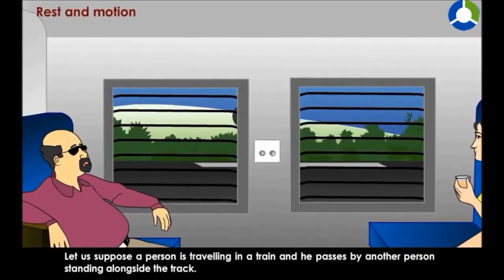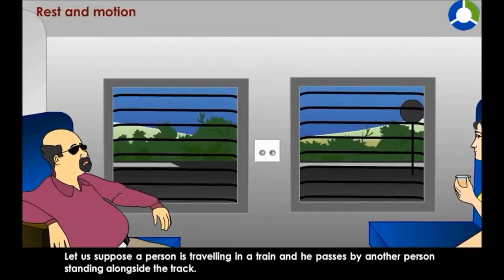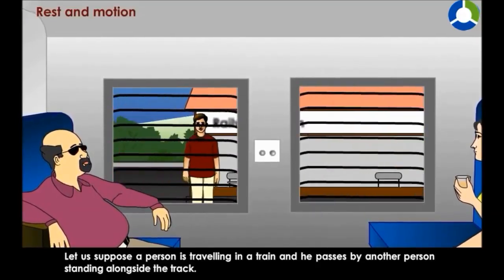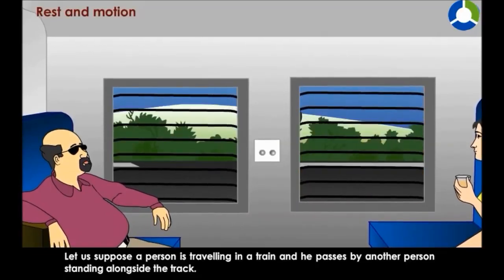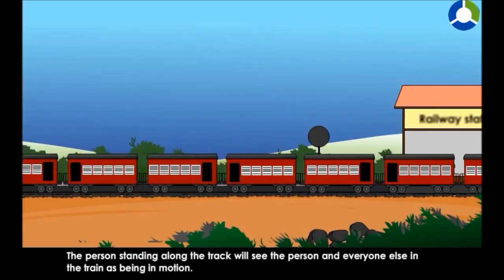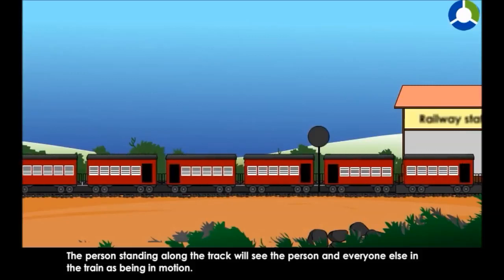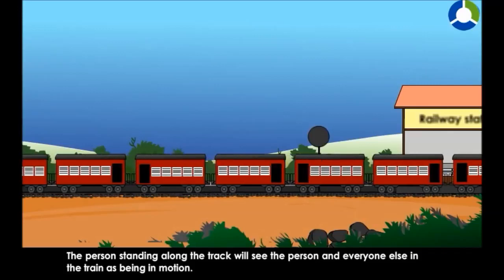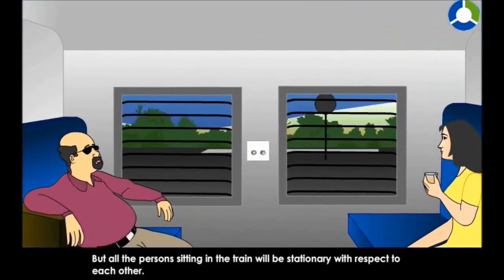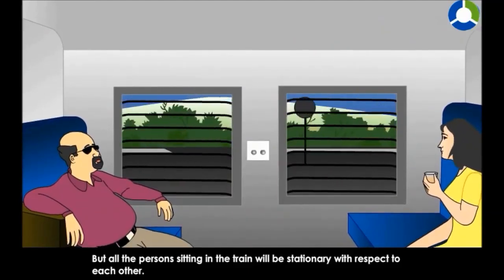Let us suppose a person is traveling in a train and passes by another person standing alongside the track. The person standing along the track will see the person and everyone else in the train as being in motion. But all the persons sitting in the train will be stationary with respect to each other.